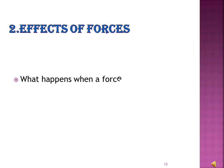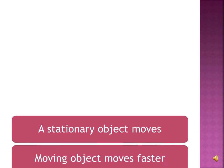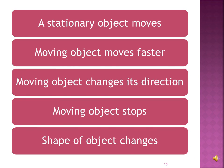Let us try to know what happens when a force is applied to a body. When a force is applied: a stationary object moves, a moving object moves faster, a moving object changes its direction, a moving object stops, and the shape of an object changes. Force changes the velocity of the object and it starts to accelerate or decelerate, depending on the mass and acceleration of the object.